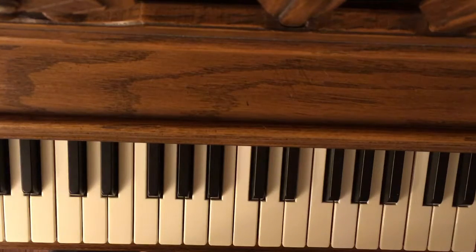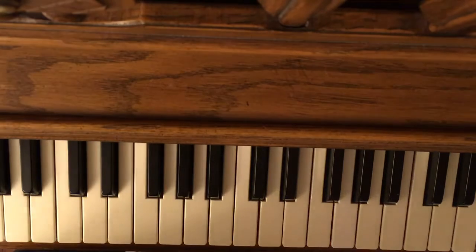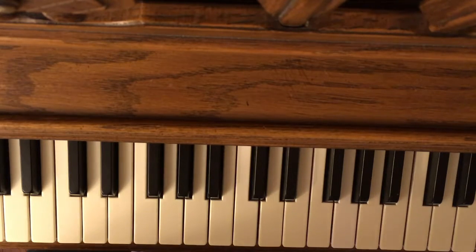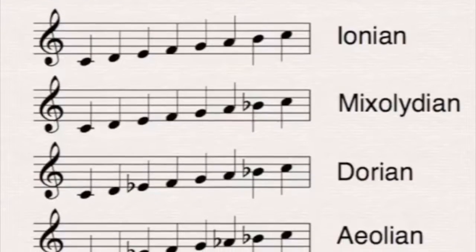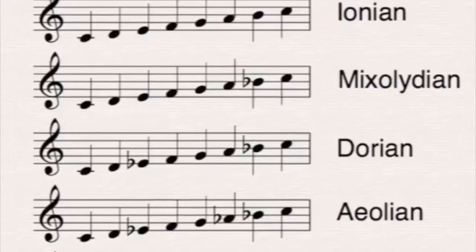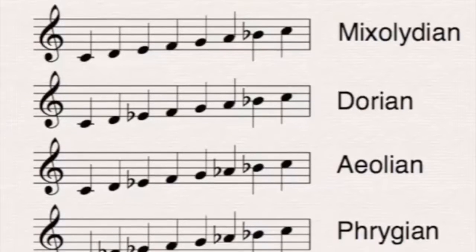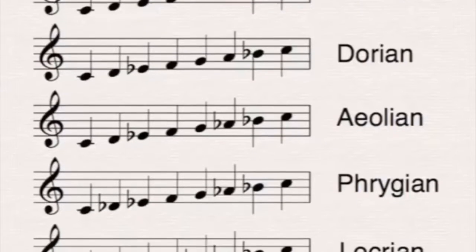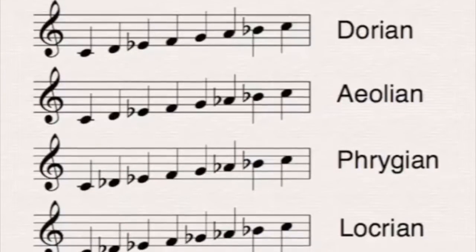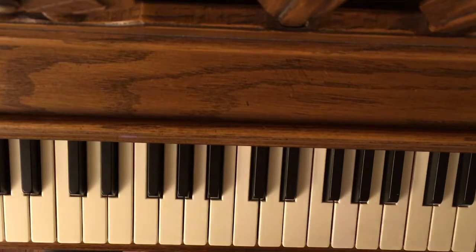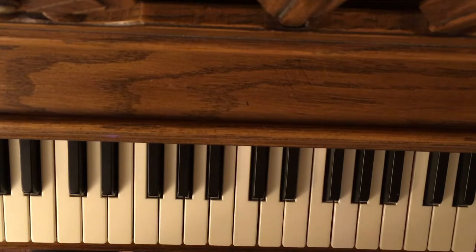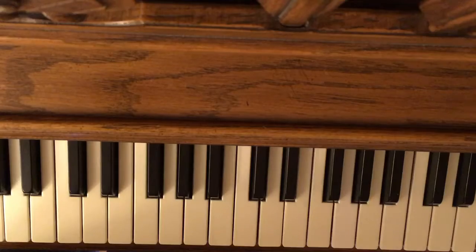Maybe you've watched the video now. One of the things he mentions is the brightness scale, and how Lydian is the brightest mode, then below that is Ionian, then Mixolydian, then Dorian, then Aeolian, then Phrygian, then Locrian is the darkest mode. And what I was thinking about is how Dorian is in the middle, and he explained how Dorian inverts to itself.